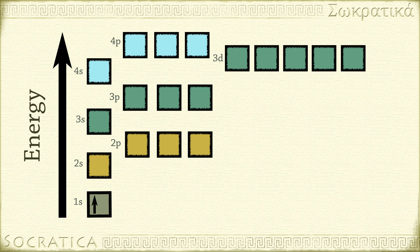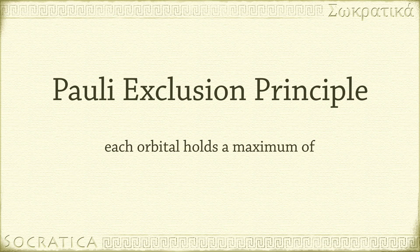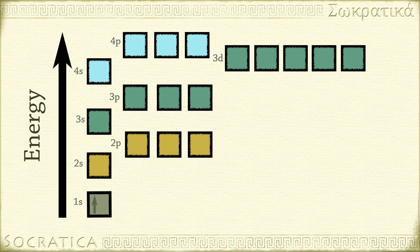We use arrows to represent electrons, and the direction they're pointing shows the direction of their spin. According to the Pauli Exclusion Principle, each orbital holds a maximum of two electrons with opposite spins. So there's a maximum of two electrons in the 1s orbital. If the atom has more than two electrons, they start filling in the subsequent higher energy orbitals.